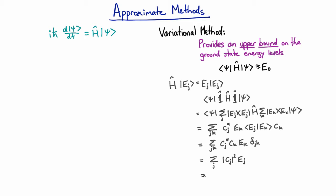And of course this is strictly greater than or equal to because e0 is by definition the lowest of those, and sum of all the probabilities is equal to 1. And so we've trivially proved that this expectation value is greater than or equal to the ground state energy.